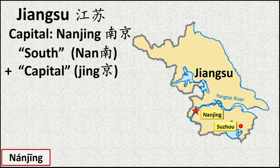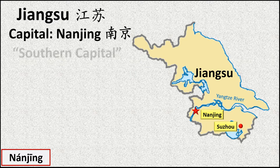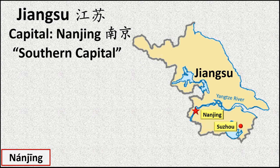The name Nanjing combines the words for south and capital. This city dates back to the 5th century before the Common Era. Besides its current role as a provincial capital, it was an on-again, off-again capital of China for almost 2,000 years. Nanjing: the southern capital.